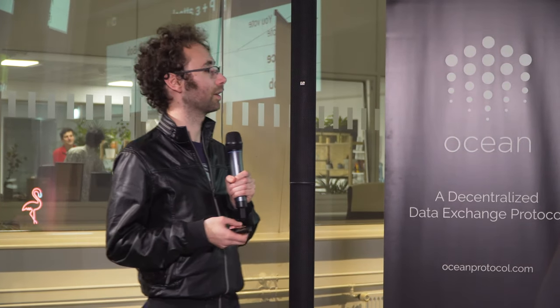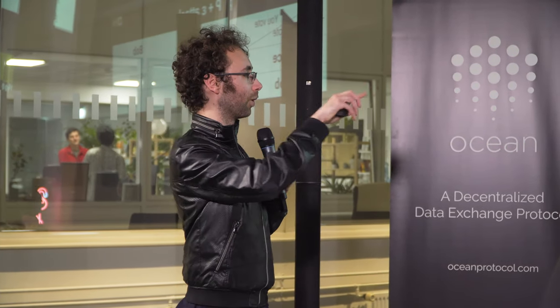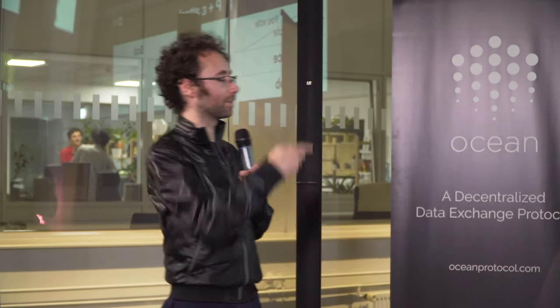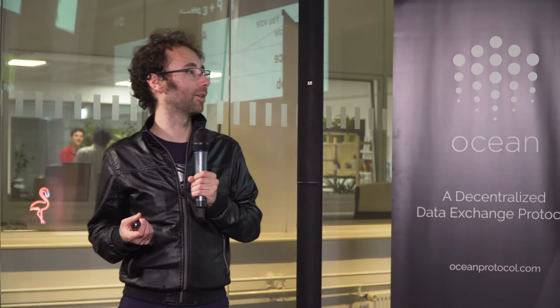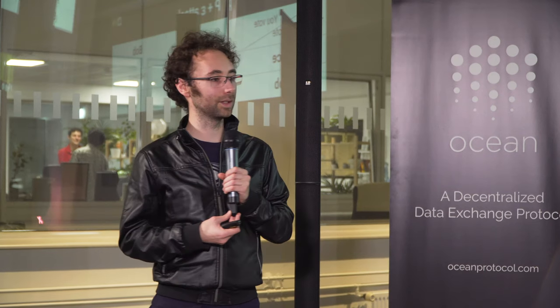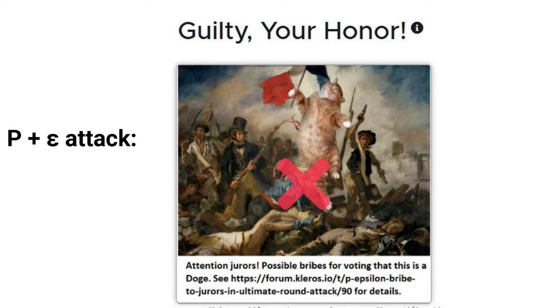Jurors could coordinate to only partially accept bribes, or some might remain honest regardless, with only a small fraction taking bribes. That's why this attack, even if theoretically interesting, failed in practice when we tried it. We had submissions with a 'fat cat' image as P+epsilon attacks backed by smart contracts — guaranteeing jurors would be paid if the attack failed. Some jurors were bribed, but the attack still failed.